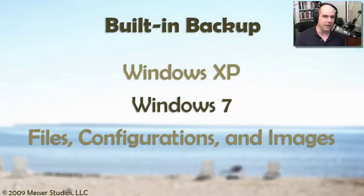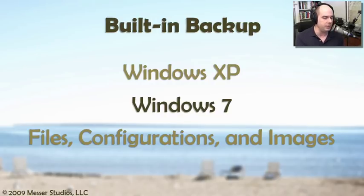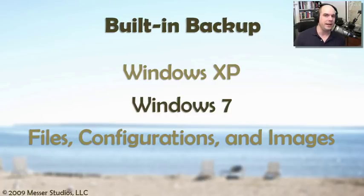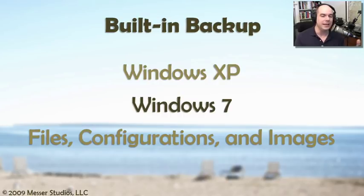In Windows 7, Vista, and XP you have built-in backup. You can backup individual files, directories, and configurations — maybe you want to save the entire registry occasionally. You can also take everything on your hard drive and create a disk image of your entire system somewhere else. If your entire system goes away, you simply recreate it — like recopying your entire hard drive to a new one. You don't have to reinstall operating systems or programs. It makes an exact duplicate of your entire drive so you can restore it exactly.